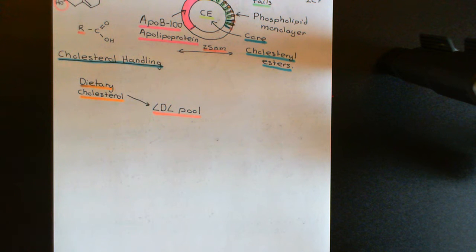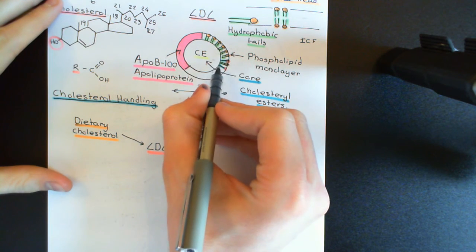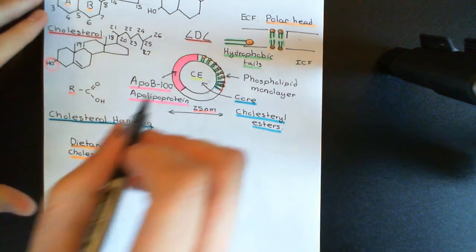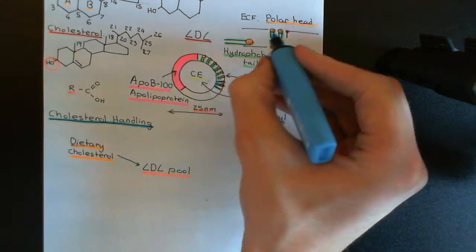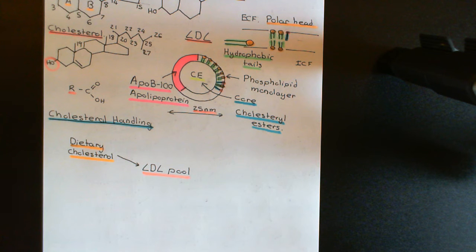Cholesterol is an extremely important molecule. We have it in the cell membranes of all the cells in the body — it's a valuable part of these cell membranes. Just as I showed you in the phospholipid monolayer of LDL particles, cholesterol can exist within the phospholipid bilayer of cell membranes. In the phospholipid bilayer of the cell membrane, a cholesterol molecule sits with the red dot representing the alcohol group — the polar head — and the blue line representing the hydrophobic portion.